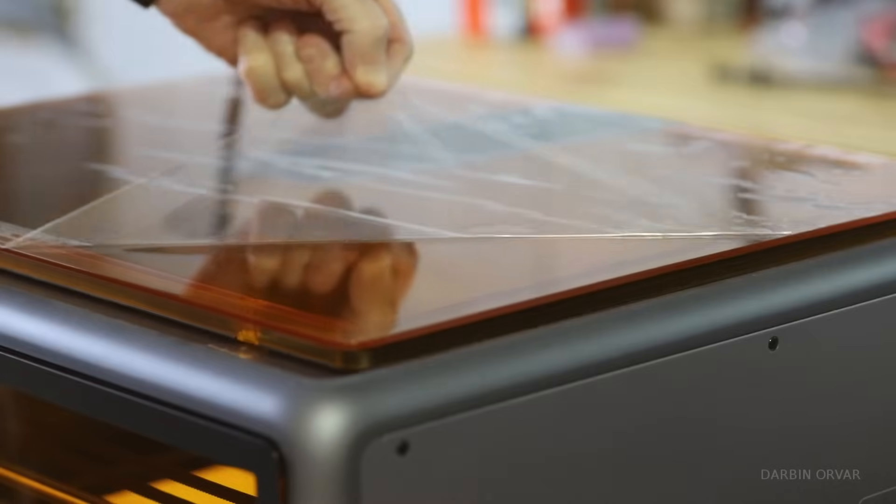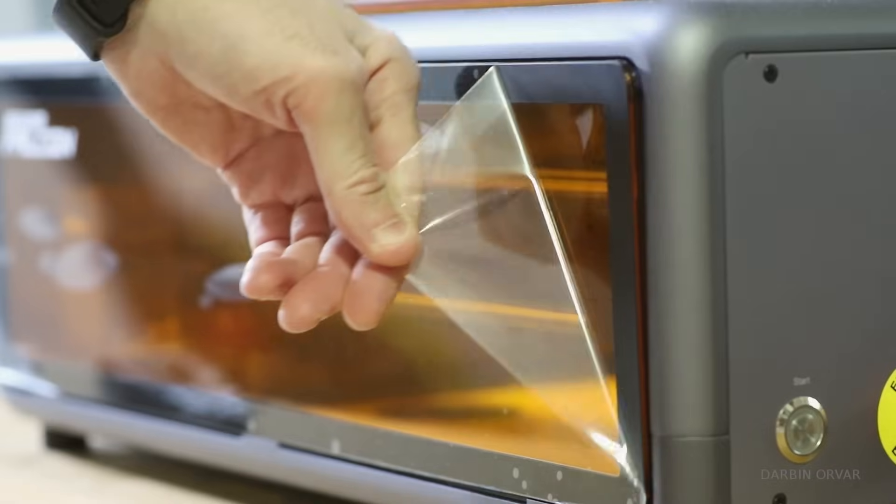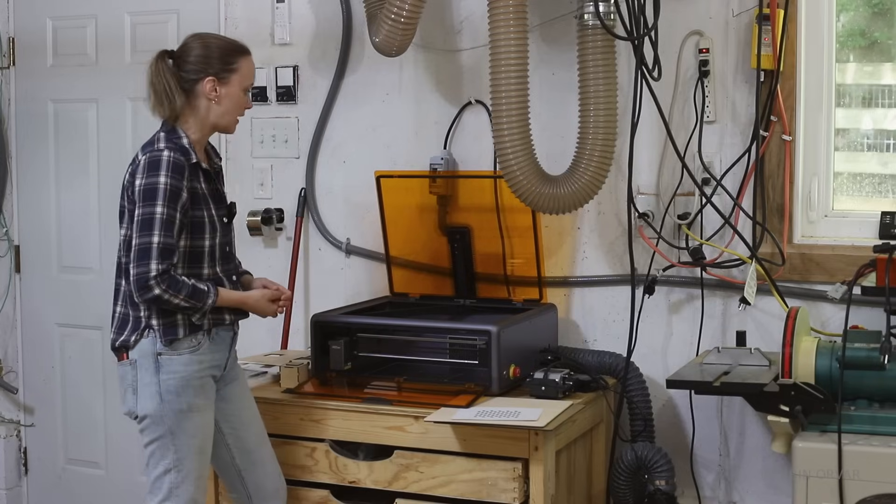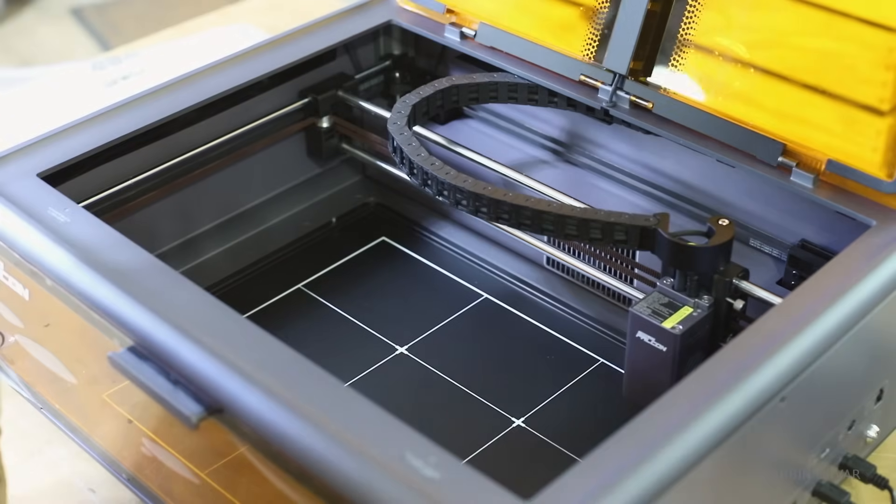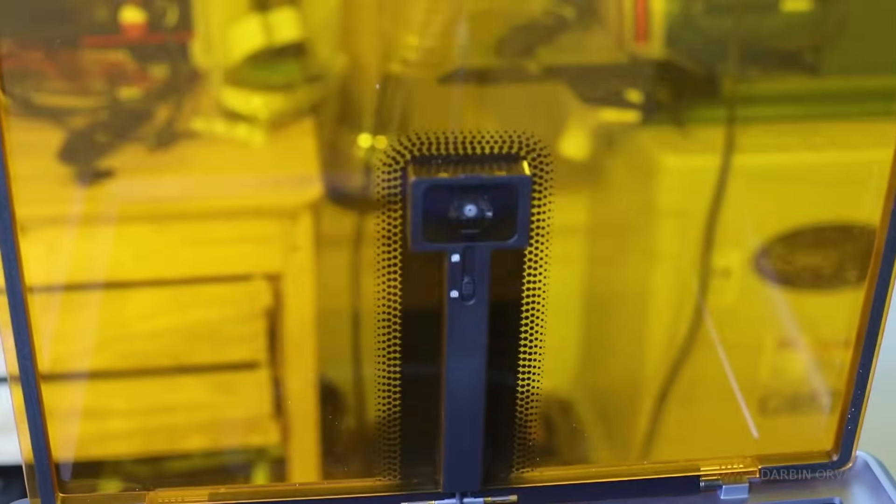Now you notice that this is orange. That means once this is closed, you don't need to wear any protective glasses, so it is safe to use around kids, inside the home. Having an enclosure is nice. If you've ever used lasers without enclosures, you know what I'm talking about.